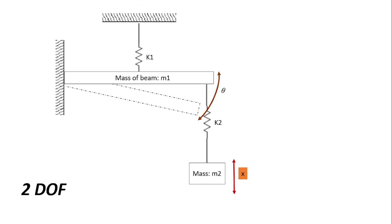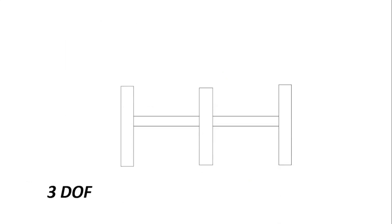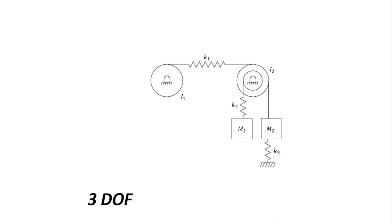Degrees of freedom could also be three. We could have three gears connected to a shaft forming a three degree of freedom system, with rotation theta-one in the first gear, theta-two in the second gear, and theta-three in the third gear. There are different forms this could take — the shaft could also be fixed at its end.